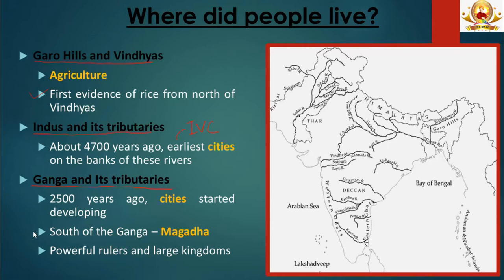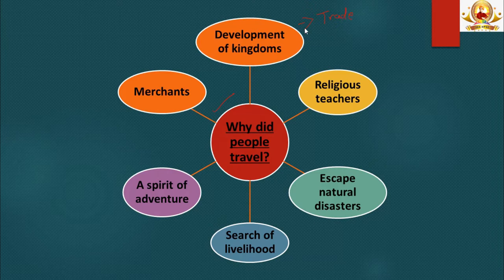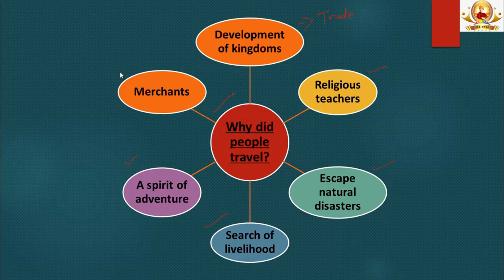The area south of the Ganga was known as Magadha. About 2,500 years ago, cities again started developing on the banks of the Ganga and its tributaries — the period of Mahajanapadas, with the rise of powerful rulers and large kingdoms. People traveled throughout history for many reasons: in search of better opportunities, to preach religious teachings, to escape natural disasters, in search of livelihood, driven by adventure, or as merchants carrying goods. All this led to sharing of ideas and enrichment of cultural traditions.